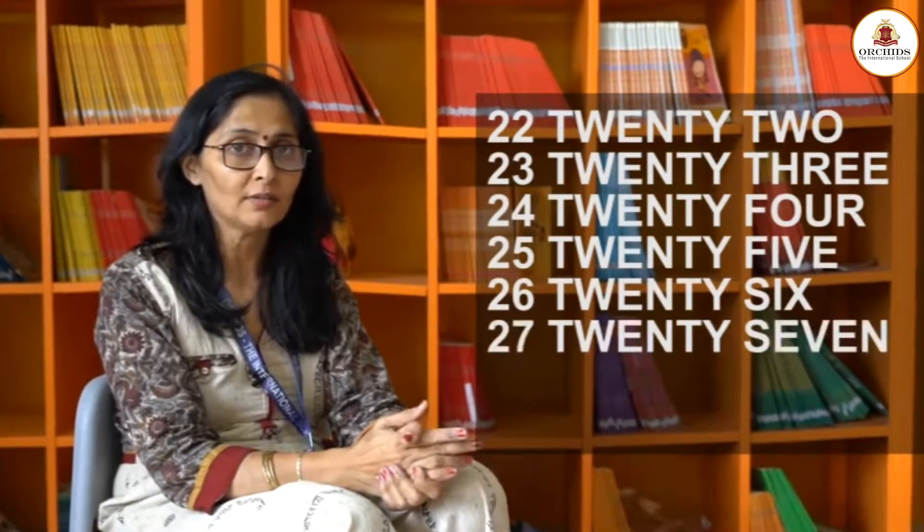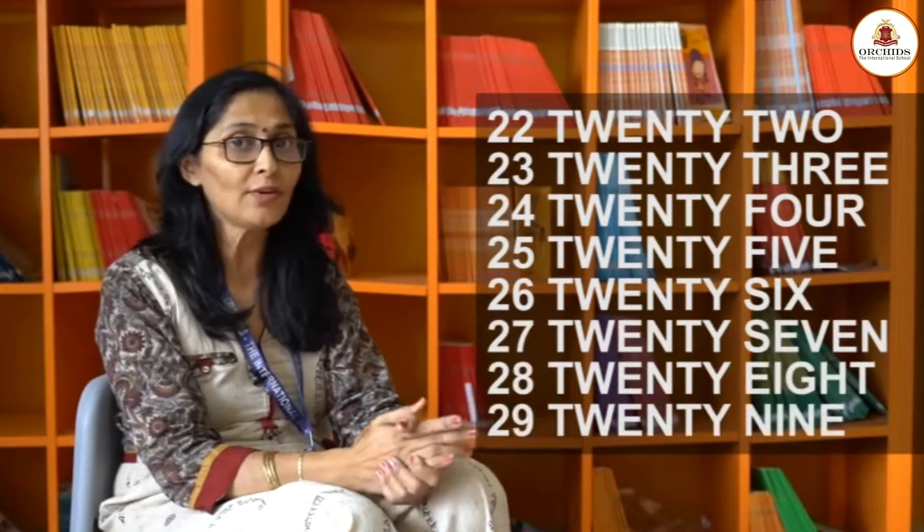Now once you have learnt the spelling of 20, you can make the spelling of 21, because now you know the spelling of 20 as well as 1. So 21 — TWENTY ONE. Similarly you can make the spellings of 22, 23, 24, 25, 26, 27, 28 and 29.